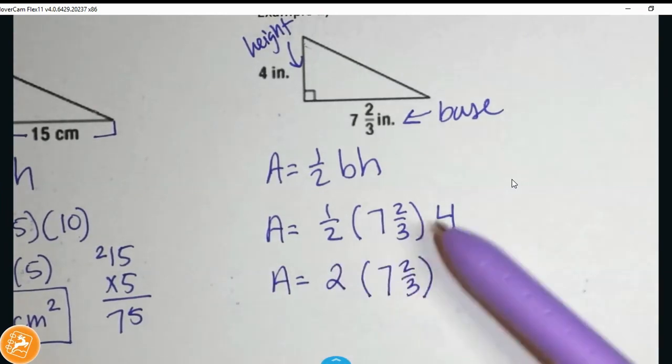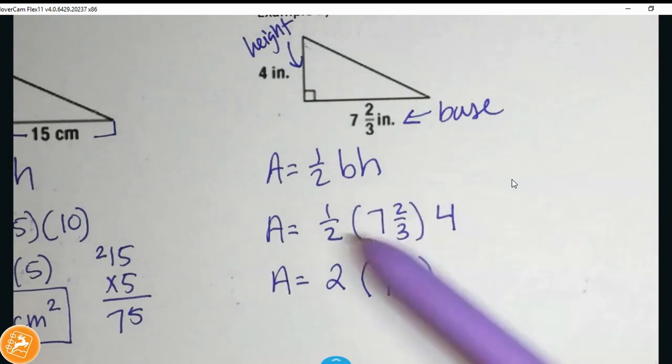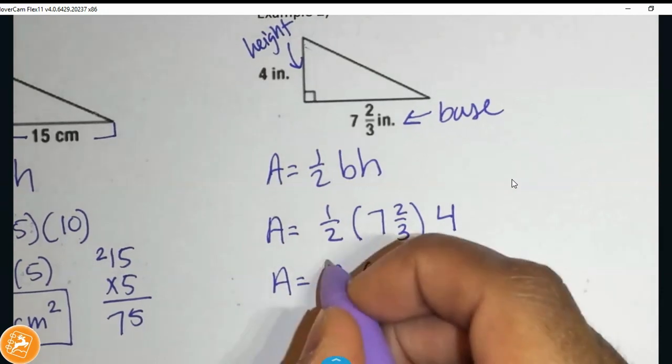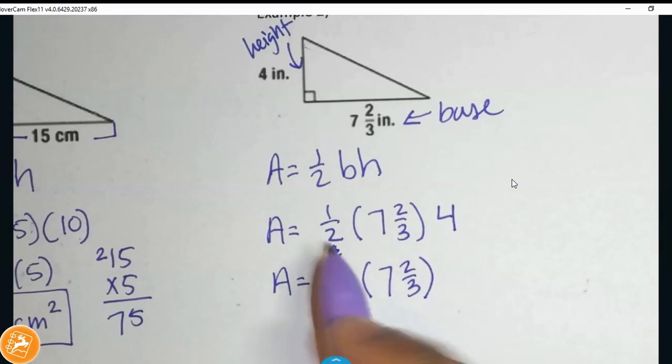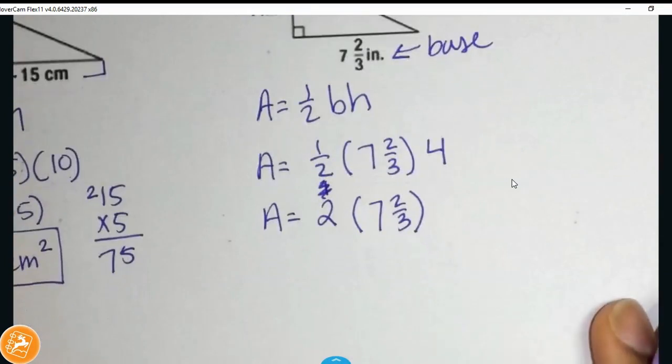Now, again, you could do one half times 7 2/3 and then multiply that by 4. In this case, I want to go ahead and just do one half of 4 because I know that off the top of my head. So, half of 4 is 2. Now, I'm going to multiply this over here.